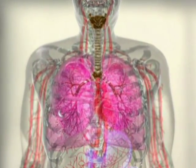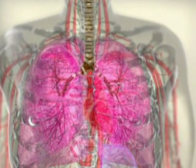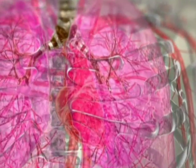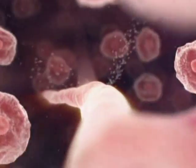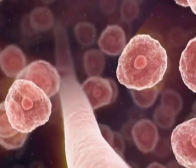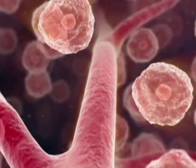All cells obtain the oxygen and nutrients they require to survive from nearby blood vessels. Every cell is located no further than the mean oxygen diffusion distance of 0.1 to 0.2 millimeters from a blood vessel.